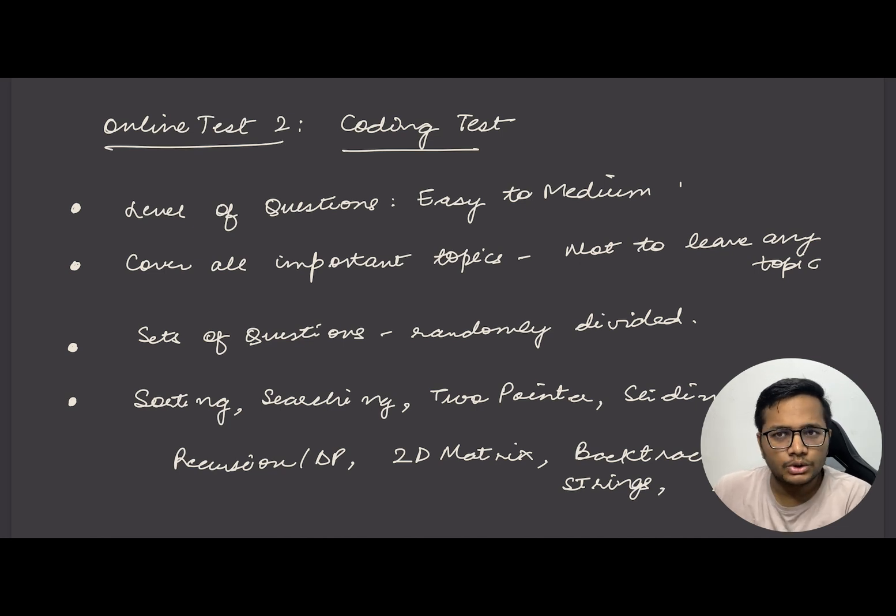Online Test 2 is a coding test. Easy to medium level coding questions will be asked. It covers all important topics—don't leave any topic. You might get a question from tries or basic segment trees or query-based questions. Cover at least basic fundamentals of every topic. It will not only help you ace the exam but boost your confidence that if a problem from any topic comes, you'll be able to attempt it.